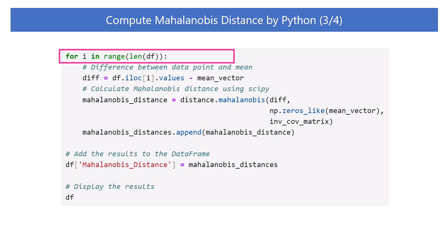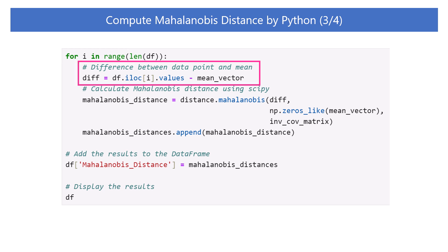DF is the number of data points. DF.loc[i] selects the i-th data point. Then, values is used to get that row as a NumPy array. Now, subtract the mean vector from each data point to obtain the deviation vector — that is, the difference between the data point and the mean.